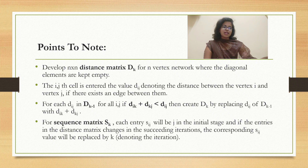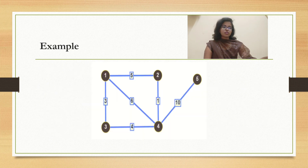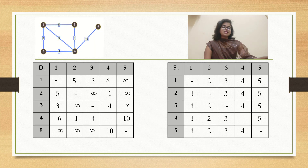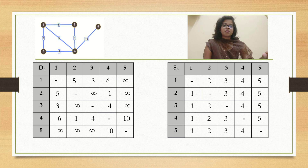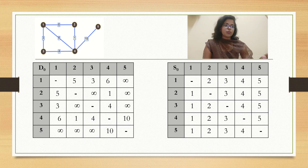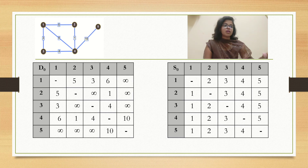It will be much clearer while moving on to the example. In the initial stage, the distance matrix is denoted by D0 and the sequence matrix is denoted by S0. All the diagonal entries will be kept empty. D12 is given by 5, which is the edge weight between 1 and 2. D13 is 3 because the edge weight between 1 and 3 is 3. D14 is 4 and D15 is infinity, because there is no edge between 1 and 5. If there is no edge between any two nodes, we keep the entry as infinity.